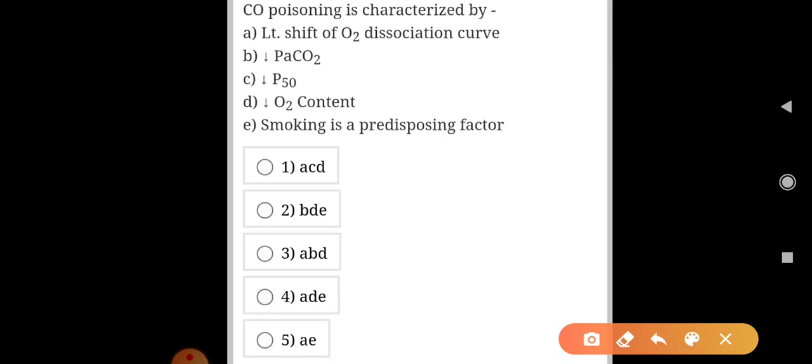Carbon monoxide poisoning is characterized by decreased PaCO2, decreased oxygen content. Smoking is a predisposing factor. So the answer here is BDE.